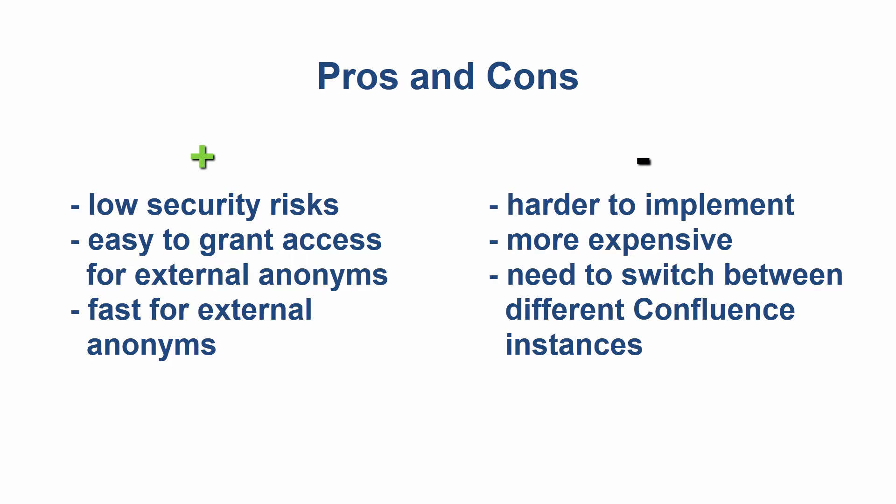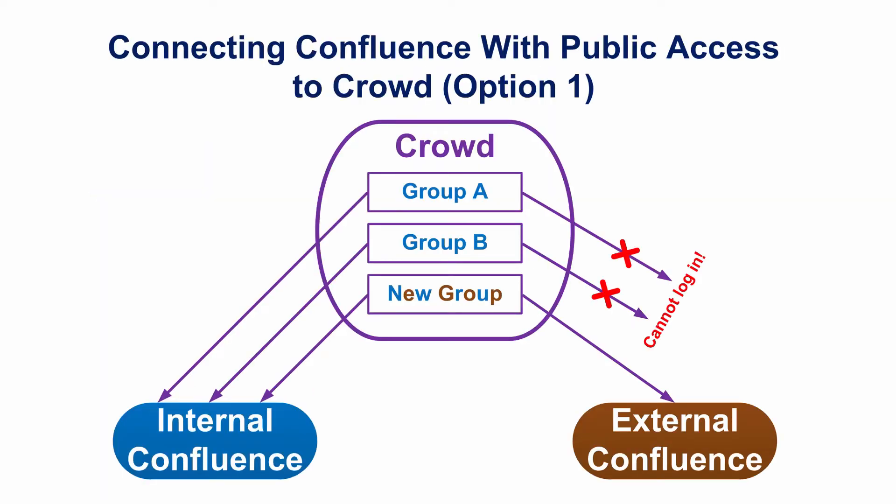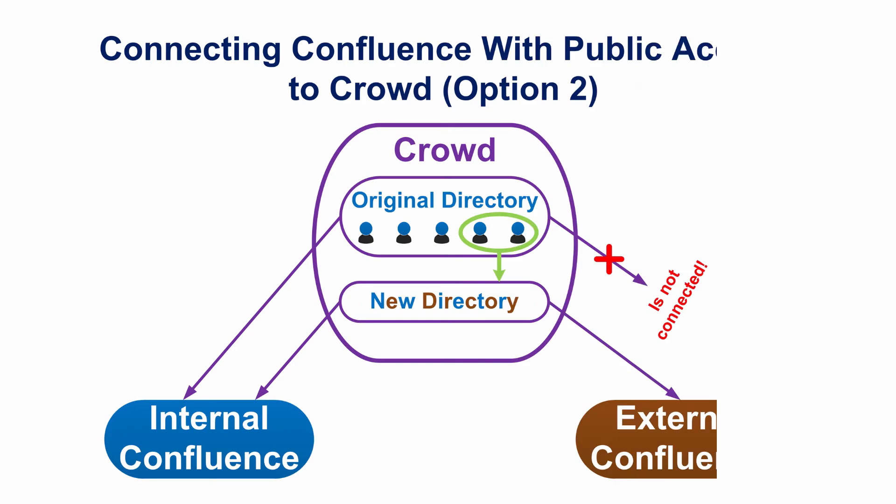There are several solutions and we are going to cover them later. If you choose a server instance, you can connect it to your existing Crowd that is used by your internal Confluence site. The first option is to create a separate group that will contain users who can work with two Confluence instances. This group should have certain permissions to create and edit pages both in internal and external sites, but only this group will have the permission to log in to the external instance, which you can specify in Crowd. The second option is to create one more directory.